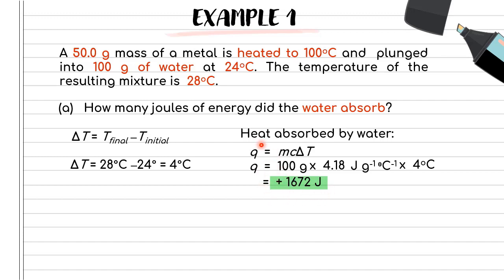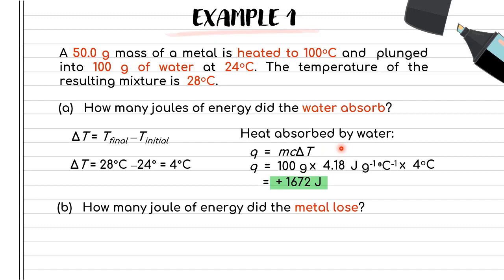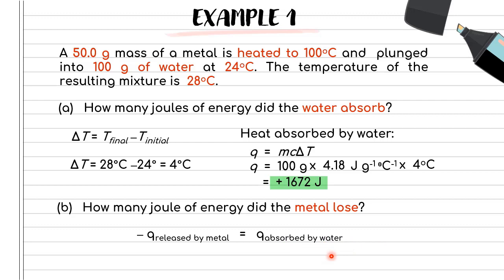For the next part, how many joules of energy did the metal lose? We can rely on the equation −Q_released = Q_absorbed. The heat released by the metal equals in magnitude the heat absorbed by the water. So Q_released by the metal is −1672 J. This negative sign belongs to the heat released, still in joules.